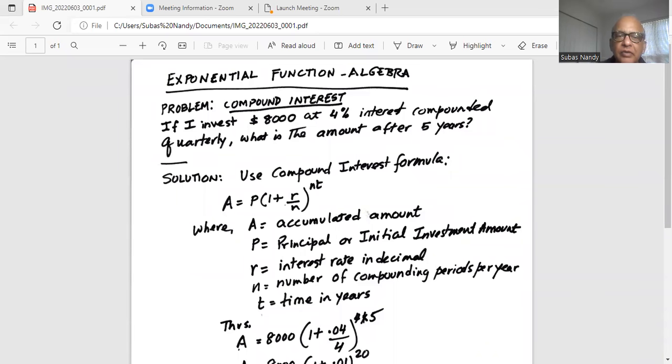So this is a problem in application of exponential function in algebra. It's a problem on compound interest. If I invest $8,000 at 4% interest compounded quarterly, what is the amount after 5 years?